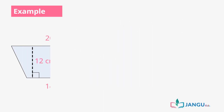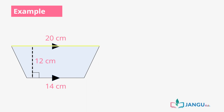Let's practice by calculating the area of this trapezium. From the image of the trapezium, you can see that A, which is the length of one side, equals 20 centimeters; B, which is the length of the other side, equals 14 centimeters; and H, which is the height of the trapezium, equals 12 centimeters.